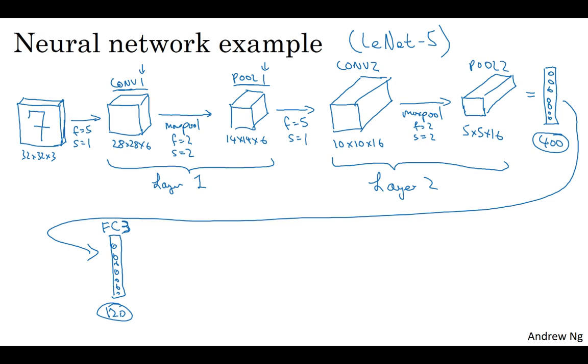This fully connected layer is just like the single neural network layer that you saw in courses 1 and 2. This is just a standard neural network where you have a weight matrix that's called W3 of dimension 120 by 400. And this is called fully connected because each of the 400 units here is connected to each of the 120 units here. And you'd also have a bias parameter. There's going to be just 120 dimensional because you have 120 outputs.